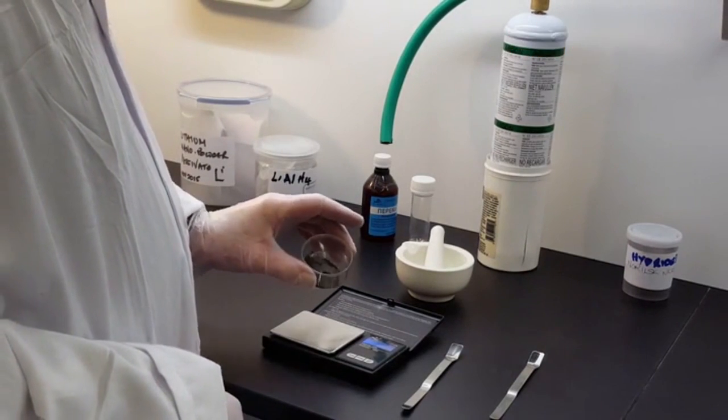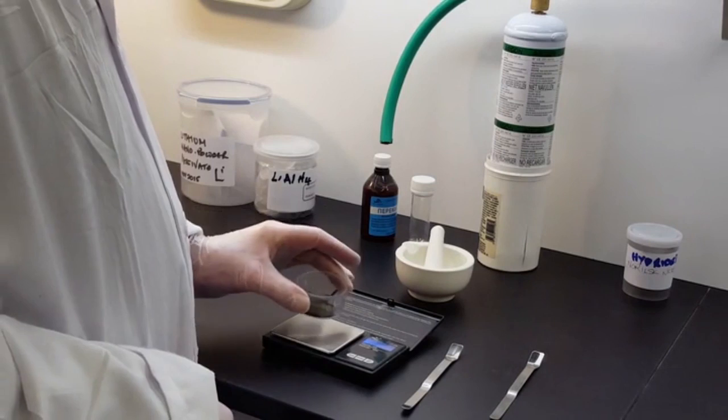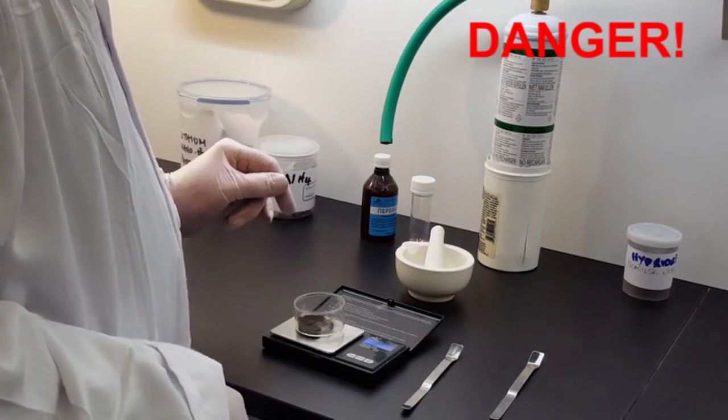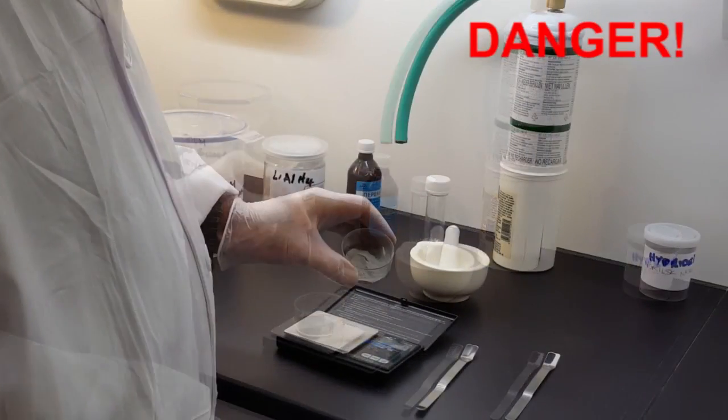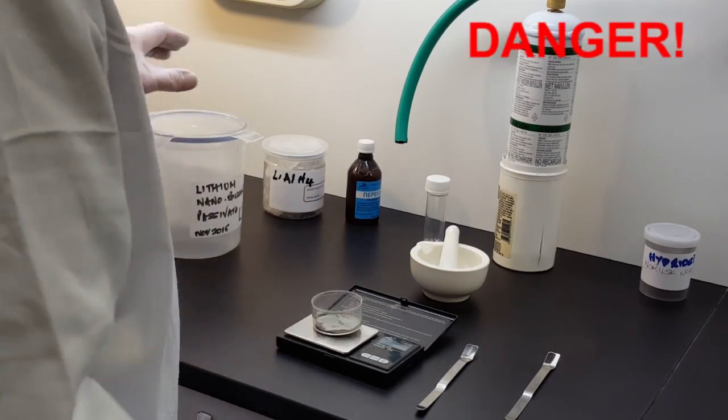Here you can see I've already weighed out five grams of hydrogenated nickel powder. The next step will be to add the lithium aluminum hydride, which as you can see is a lighter color.